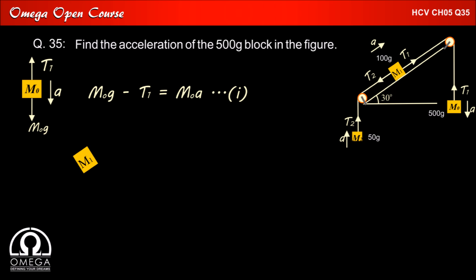Now let us draw the free body diagram of M1. The gravitational force M1g acts vertically downward, tension T1 pulls the block up the incline while tension T2 pulls it down the incline, and the block moves up the incline with acceleration A.